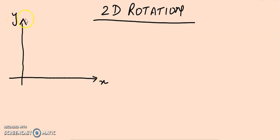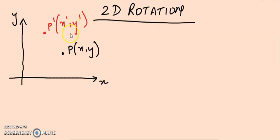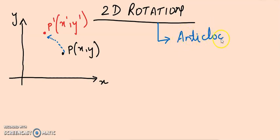We have an x and y coordinate system. This is my original point P(x, y) on my 2D coordinate system, and this is my final point P'(x', y'). The point is moving to the left-hand side, going from the right side to the left. As discussed in the last lecture, 2D rotation can be done in two types: one is anti-clockwise and the second one is clockwise.